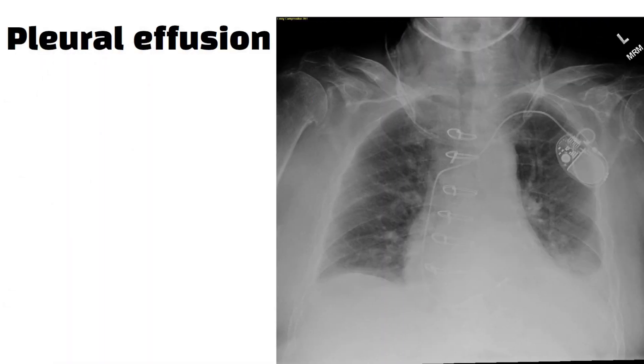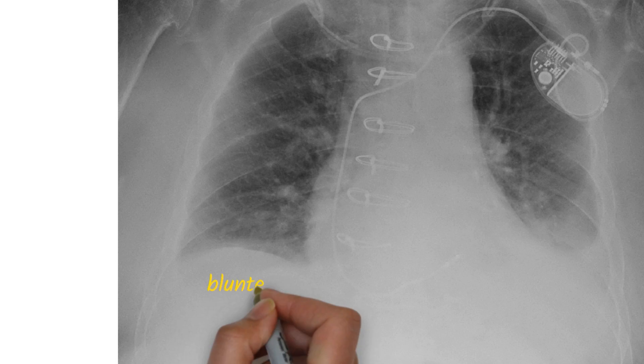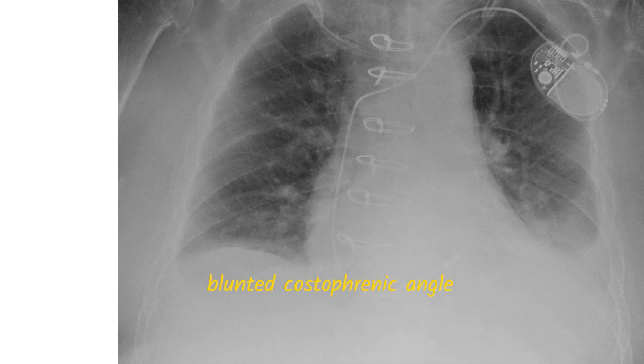E is for effusions, and it can be detected on the chest X-ray when the costophrenic angle is blunted.